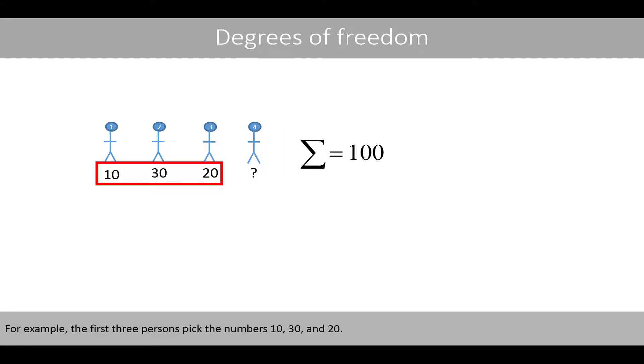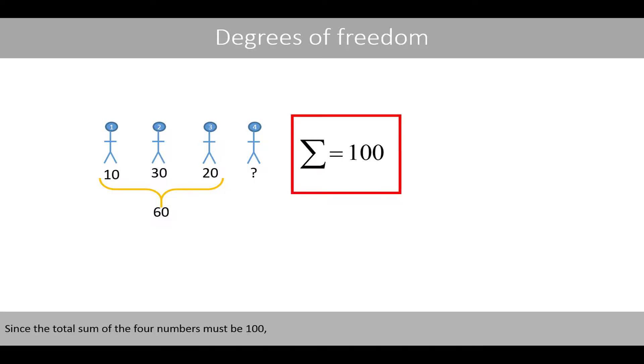For example, the first three persons pick the numbers 10, 30, and 20. The sum of these three numbers is 60, since the total sum of the four numbers must be equal to 100.